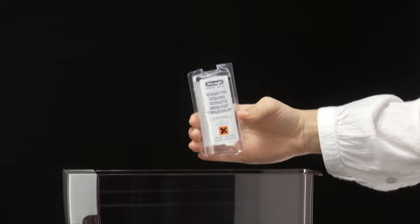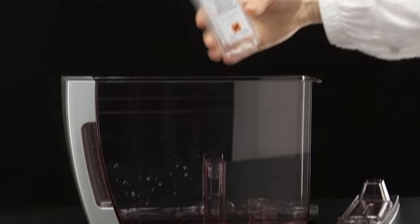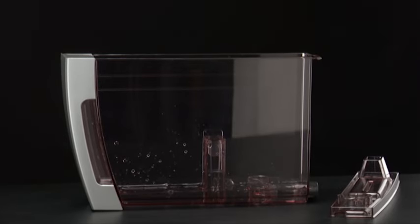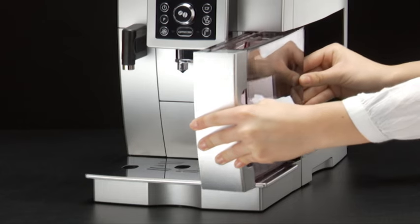Pour the descaler into the tank up to level A, corresponding to a 100ml pack marked on the side of the tank. Then add water, 1 litre, up to level B and put the water tank back.